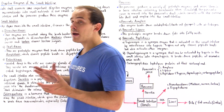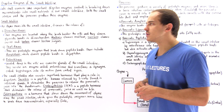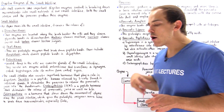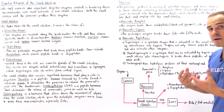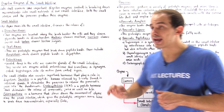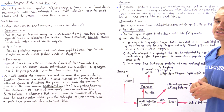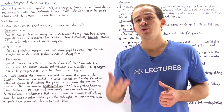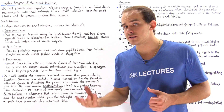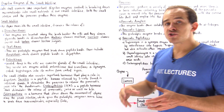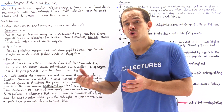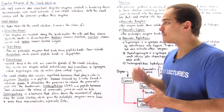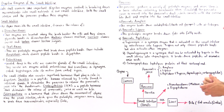Another peptide hormone released by the small intestine is CCK, which stands for cholecystokinin. Cholecystokinin not only stimulates the pancreas to release the pancreatic juice, but it also stimulates the liver to produce bile. Bile is necessary to emulsify fat — to break down and increase the surface area of fat — allowing lipase and other proteolytic enzymes to break down fat efficiently and effectively.